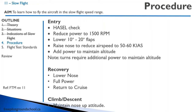If you want to climb and descend in slow flight, you have to maintain the nose-up attitude and just add or reduce the power. It's really important that you maintain the attitude, because if you add full power without maintaining that attitude, you're going to come out of slow flight and accelerate rapidly out of the slow flight range.